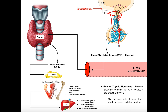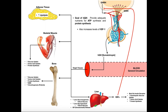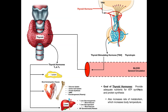The overall goal of thyroid hormones is very similar to what we saw for growth hormone: to provide adequate nutrients for ATP synthesis and protein synthesis. To make proteins, you need a lot of ATP — hundreds of molecules per protein. In order to make ATP, you need nutrients. So the goal of thyroid hormone, like growth hormone, is to get the blood loaded with adequate nutrients, affecting adipose tissue and the liver.